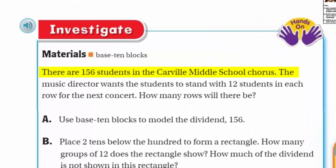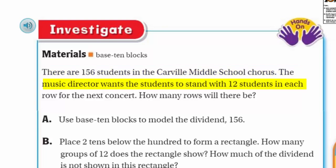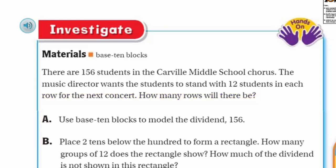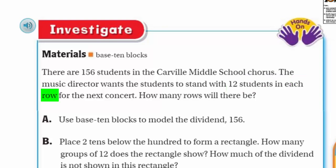It says: if there are 156 students in the Carvel Middle School Chorus, the music director wants the students to stand with 12 students in each row for the next concert. How many rows will there be? I think to myself, the operation used to solve this is division, because we have 156 students as our total and 12 students in each row.